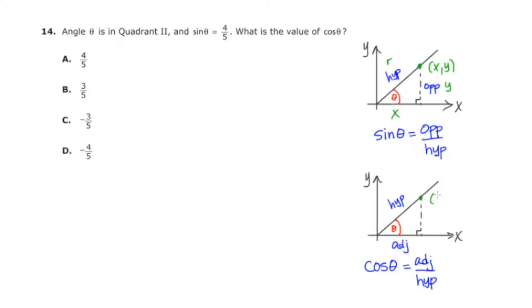this bottom piece along the x axis is the x length. The length of the altitude is the y length. And again, I'm going to call this r for the radius.